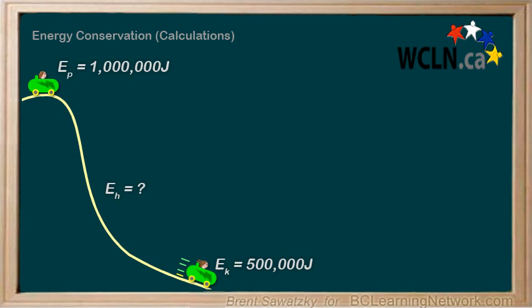The way to start this problem is by writing E_before equals E_after. On the left, before, we have all the energies at the top of the hill. Let's call it E_P and E_K for the potential and kinetic energy at the top of the hill.